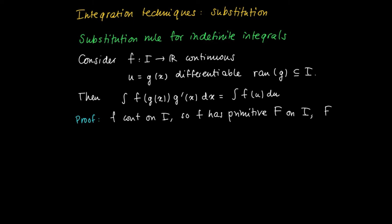So we may construct, using the main theorem of calculus, a primitive capital F of f on I. So this is a differentiable function. If we look at the composite function F of g of x and calculate its derivative, then the derivative is found using the chain rule for differentiation. So we get F prime composed with g of x times the derivative of the inner function, which is g prime of x. And we know that F prime equals small f, so f of g of x times g prime of x is the derivative of F of g of x.